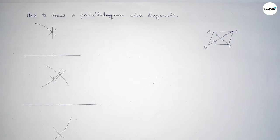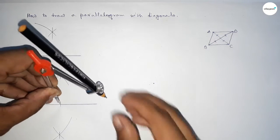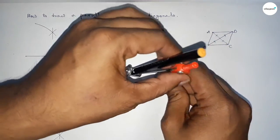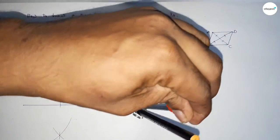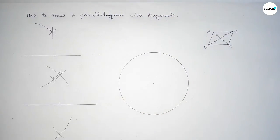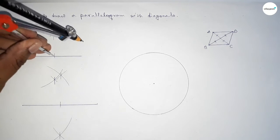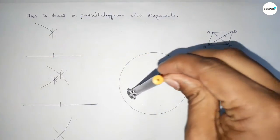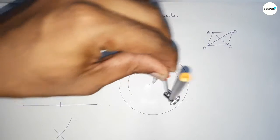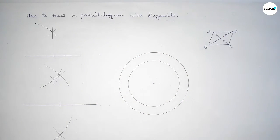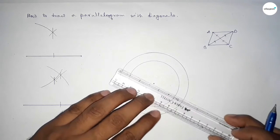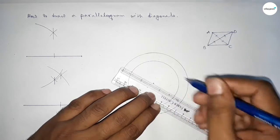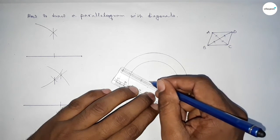There are many processes to construct a parallelogram using diagonals, but here I am using this process: taking half the length of the first diagonal to draw a circle, then taking half the length of the second diagonal, putting the compass on the center point, and drawing another circle.